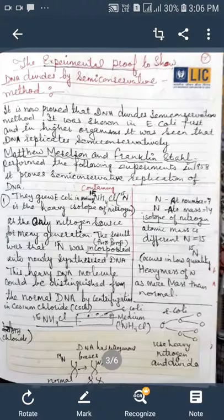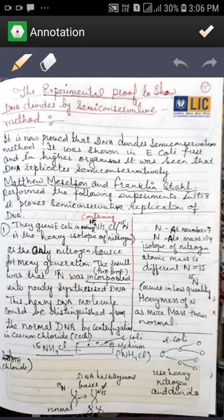Now there is experiment to show that DNA replicates semi-conservatively or conservative methods. So DNA divides by semi-conservative methods. This experiment, experimental proof was given by Meselson and Stahl. It is now proved that DNA divides semi-conservative methods. It was shown in E. coli. That was the bacteria in which the semi-conservative method was studied first. And in higher organisms, it has been shown that DNA replicates semi-conservatively. The experiments were performed by the two scientists, Meselson and Stahl, in 1958 and they showed that the replication of DNA was by means of semi-conservative method.